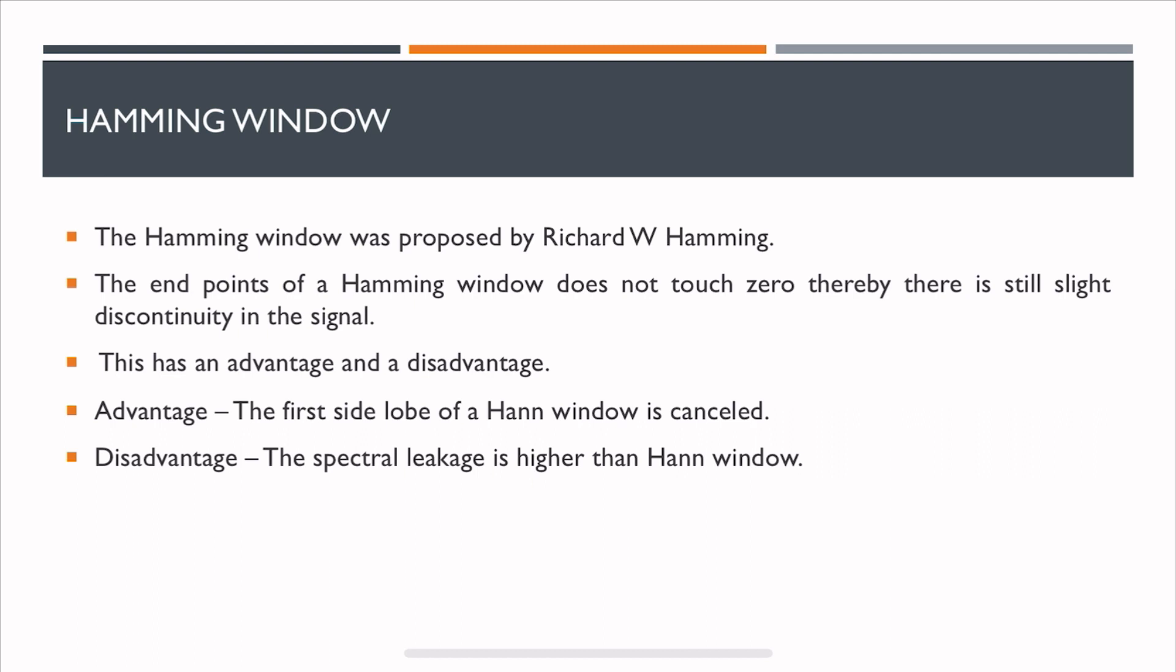However, Hamming window does have an advantage and disadvantage. The advantage is that the first side lobe of the Hann window is cancelled, but the spectral leakage is higher than the Hann window.